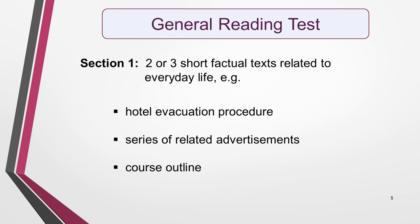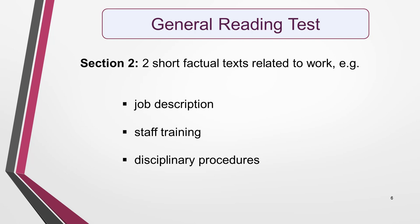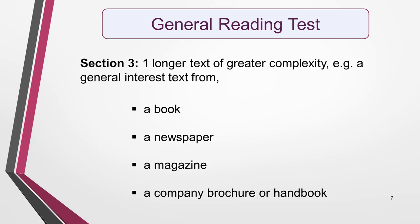The structure of the general reading test is slightly different. Again, there are three sections, but the first two contain several short texts rather than one long one. Section 1 will include texts related to everyday life — for example, it could be a hotel evacuation procedure, a series of related advertisements, or a course outline. Section 2 will have two short factual texts related to work, for example a job description, or information on staff training or staff disciplinary procedures. Section 3 will be one longer text of greater complexity — for example, a general interest text from a book, a newspaper, a magazine, or a company brochure or handbook.